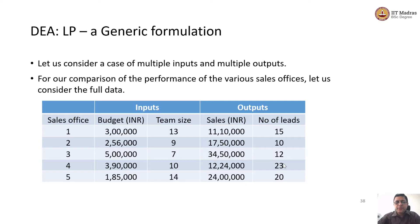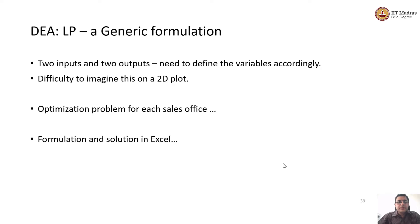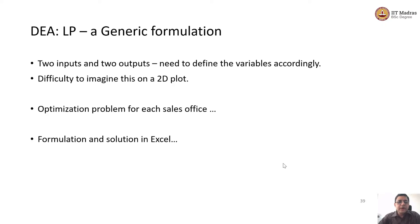This is a more generic case where there are more inputs and more outputs — not a single input case. Let us look at the formulation for this. As I said, we don't have a fallback of graphical output here; we must rely on solving an optimization problem for each of the sales offices and check whether they are efficient or not, only from the optimization value.